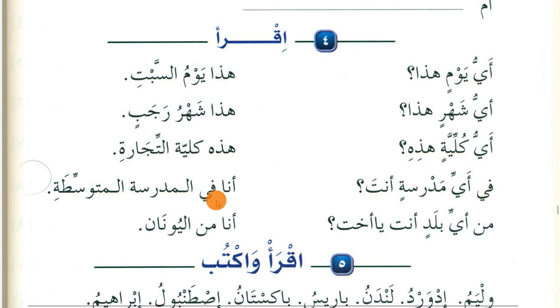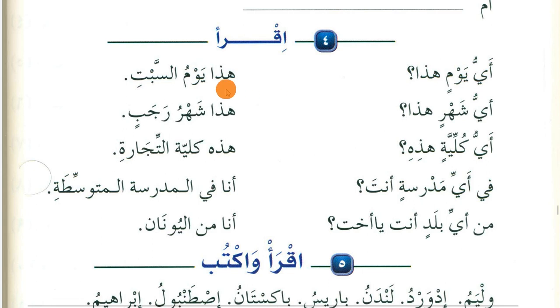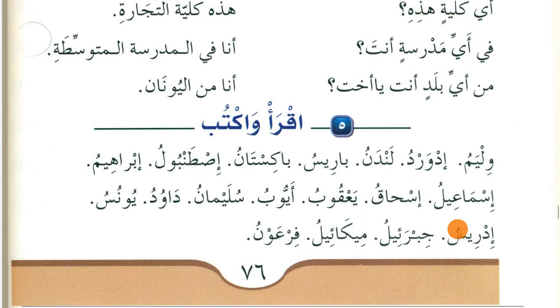Fi ayyi madrasatin anta? — In which school are you? Ana fil madrasati al-mutawassita — I am in the middle school. Min ayyi baladin anta ya ukht? — From which country are you, O sister? Ana min al-yunan — I am from Greece. Here 'ayya' is marfa (damma) because it is khabar; but after harf jar it becomes majroor (kasra).